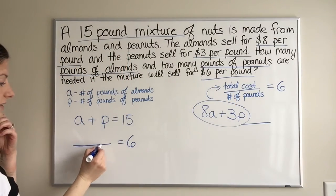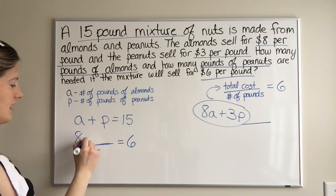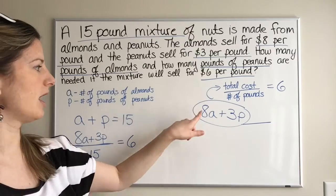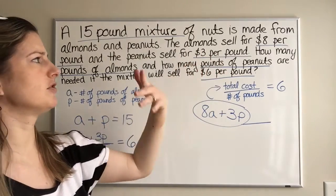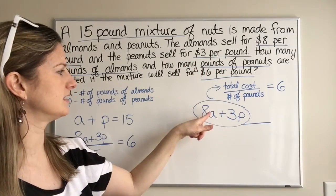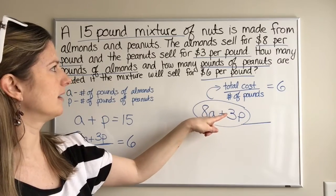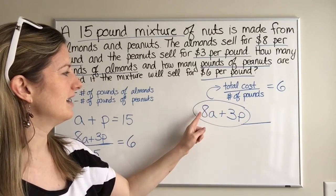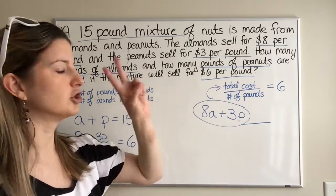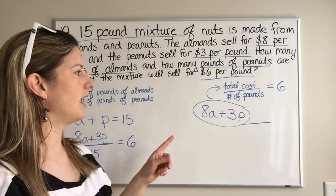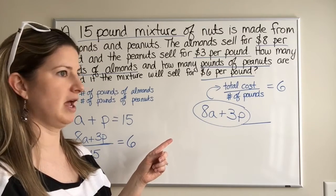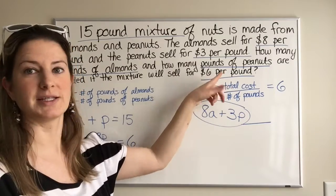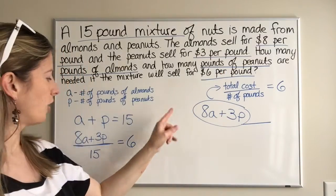So we come back to our system and say: 8A plus 3P over 15 equals 6. For example, if you had one pound of almonds it would cost $8, and one pound of peanuts would cost $3 — that's $11 for two pounds, and 11 divided by 2 is five and a half dollars per pound. But we want six — that's just a quick example to think about it.